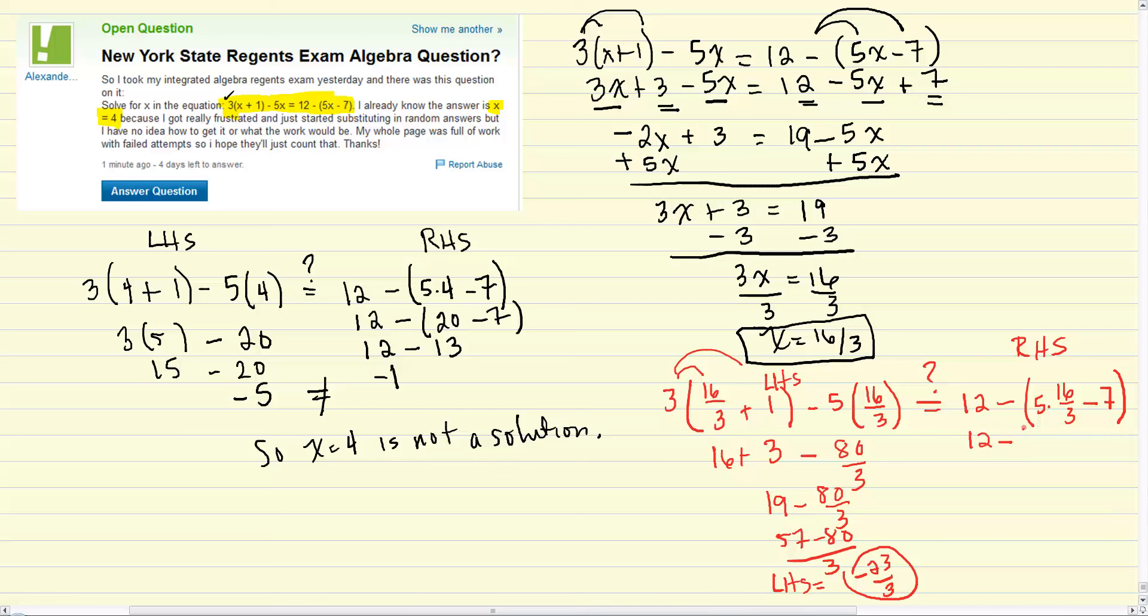What do we get on the right-hand side? 12 minus, I think that's 80 thirds. That's what we just got. Minus 7. 12 minus, let's put the whole thing over 3. So that'll be 80 minus 21. What is that? Let's see. That's 59 thirds. 12 minus 59 thirds. So that's 36 minus 59 thirds. Which, lo and behold, is indeed negative 23 thirds. So our left-hand side and our right-hand side equal. And so we've checked that 16 thirds is the correct answer.